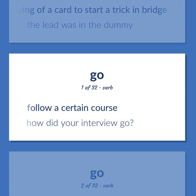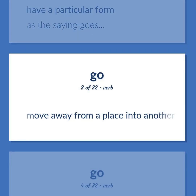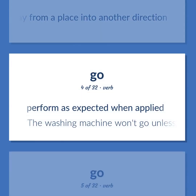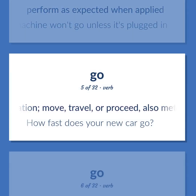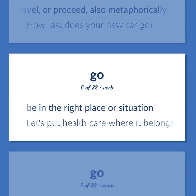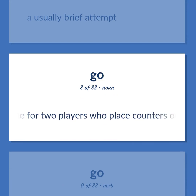Go: follow a certain course — 'How did your interview go?' Have a particular form — 'As the saying goes.' Move away from a place into another direction. Perform as expected when applied — 'The washing machine won't go unless it's plugged in.' Change location; move, travel, or proceed, also metaphorically — 'How fast does your new car go?' Be in the right place or situation — 'Let's put healthcare where it belongs, under the control of the government.' A usually brief attempt. A board game for two players who place counters on a grid; the object is to surround and so capture the opponent's counters.